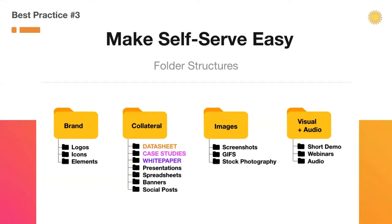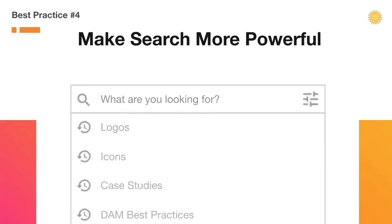Folders are also great for locking down specific assets — if you only wanted people in a certain country or product team to see those files, folders can work really well. But try not to create duplicate areas. Rather than spending your time relying on highly sophisticated folder structures, spend your time making your search more powerful instead, which is best practice number four.